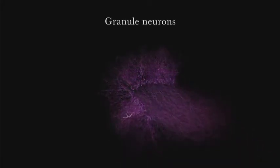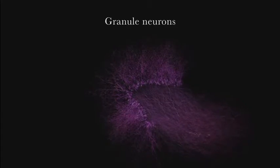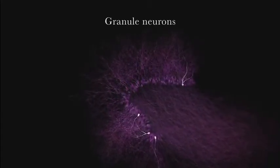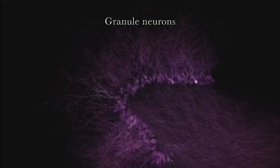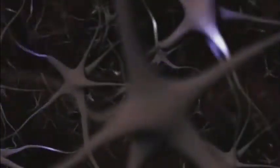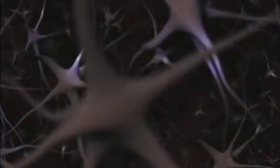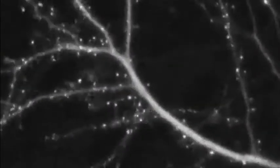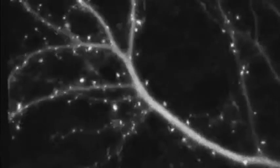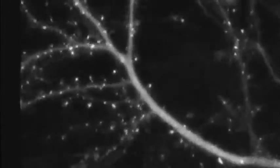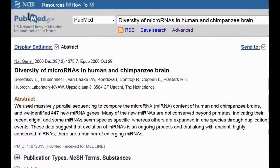This is an interesting article, it's titled Diversity of MicroRNAs in Human and Chimpanzee Brain. We used massively parallel sequencing to compare the microRNA content of human and chimpanzee brains, and we identified 447 new microRNA genes. Many of the new microRNAs are not conserved beyond primates, indicating their recent origin, and some microRNAs seem species-specific, whereas others are expanded in one species through duplication events.